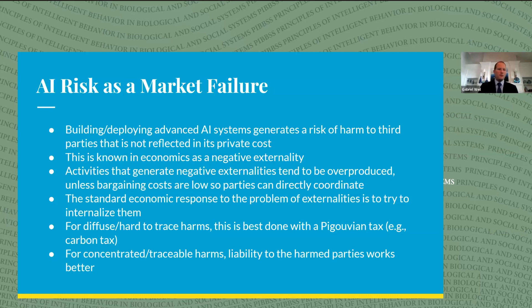There might be harms to parties that aren't buying or selling AI services. In economics, that's known as a negative externality. Activities that generate negative externalities tend to be overproduced unless parties can efficiently bargain or coordinate to eliminate them. If a factory is polluting and harming 10,000 people, it's going to be hard for all those people to coordinate, even if everyone would be better off if they paid the factory to stop polluting.